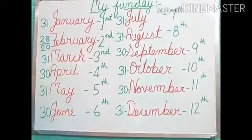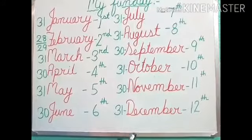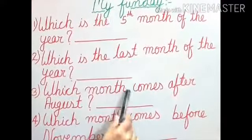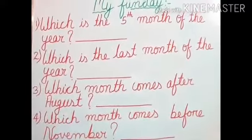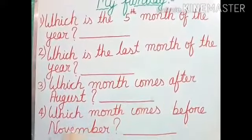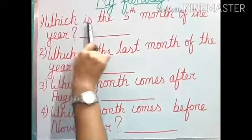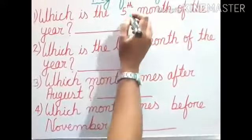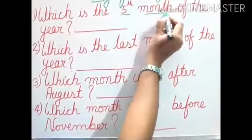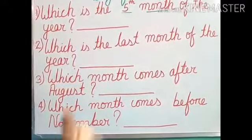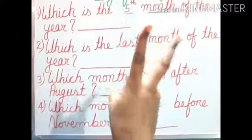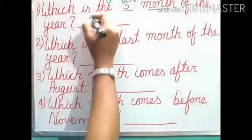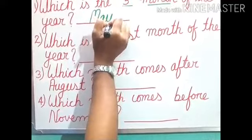Now let us see the questions based on months. Question 1: Which is the 5th month of the year? Let us count — January, February, March, April, and May. So the 5th month is May. We will write: the 5th month of the year is May.